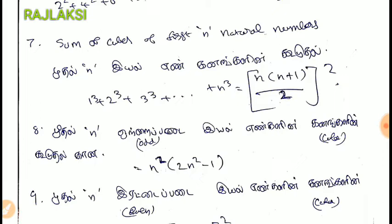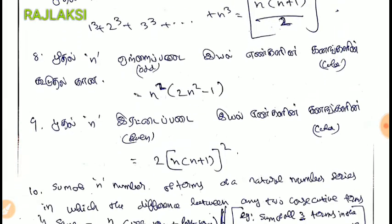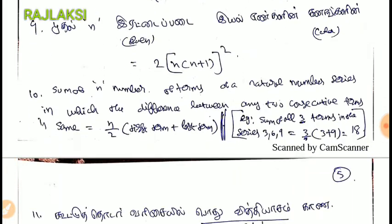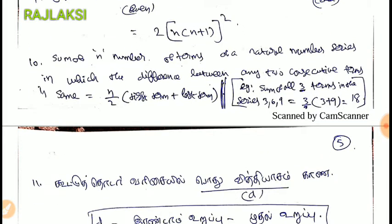The sum of the cubes of the first N natural numbers. The numbers are the same as N into N plus 1. Now: 1 cube, 3 cube, 5 cube. The number of terms — natural number series.